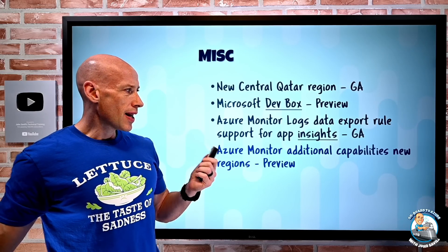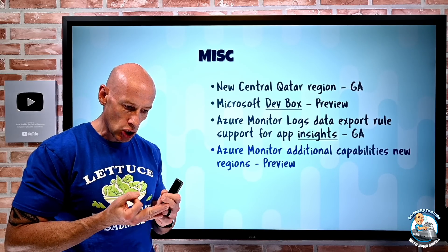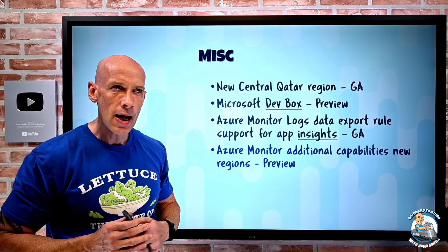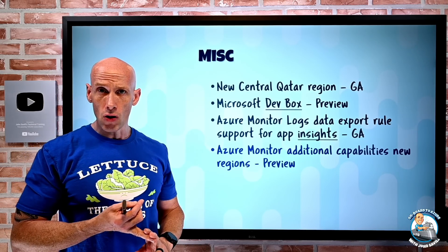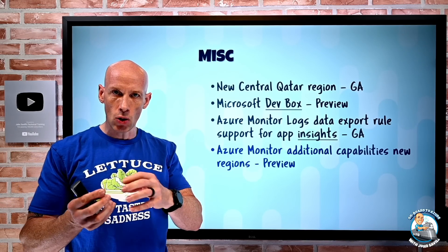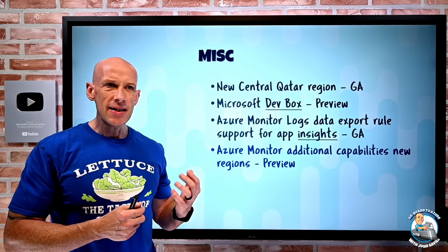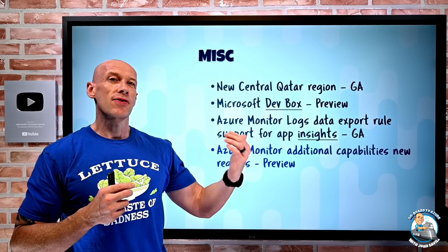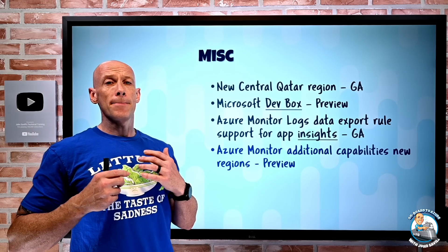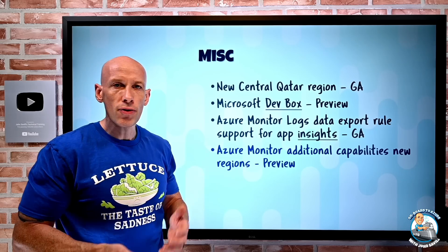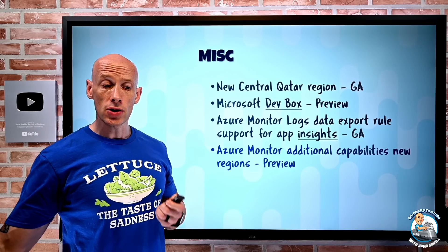Azure Monitor also now has additional capabilities available in new regions: US Virginia Gov, US Arizona Gov, China East 3, and China North 3 — covering more sovereign clouds. Azure Monitor Logs recently introduced basic logs and archive logs. Basic logs are cheaper to ingest with a limited KQL feature set and are retained for only eight days. Archive logs can be kept much longer at much lower cost, but you need to bring data back via a restore or search job to work with it. All those features are now available in those new regions.